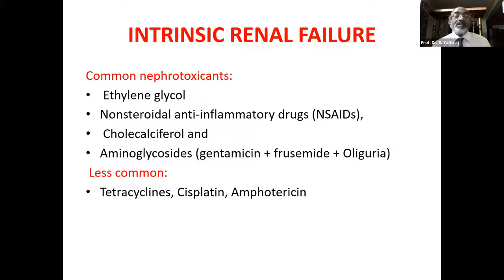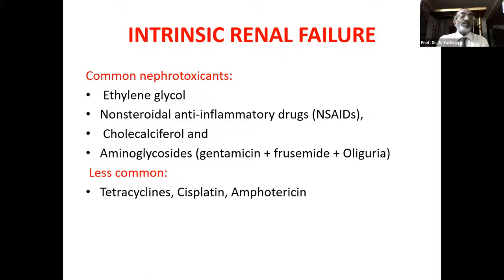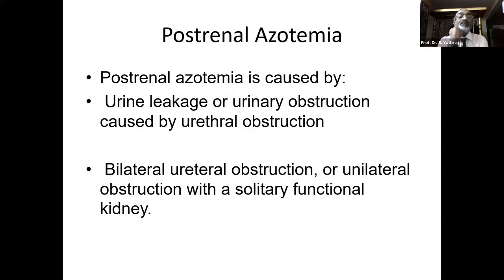Less common nephrotoxicants include tetracyclines — oxytetracycline when used for treatment of theileria for two to four weeks can definitely damage the kidneys. Doxycycline may be safer. Cisplatin and amphotericin B, used in fungal diseases, could also be nephrotoxicants. Post-renal: this is urine leakage or urinary obstruction caused by urethral obstruction — bilateral ureteral obstructions or unilateral with a solitary functional kidney — can lead to severe post-renal azotemia.